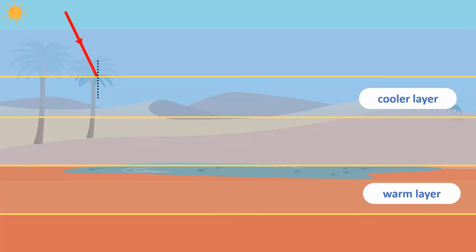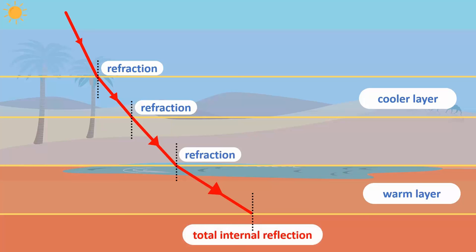Light rays refract while traveling from the cooler rays to the hotter layers. In the layer nearest the ground, total internal reflection occurs. A mirage appears when total internal reflection and refraction happen in these layers.